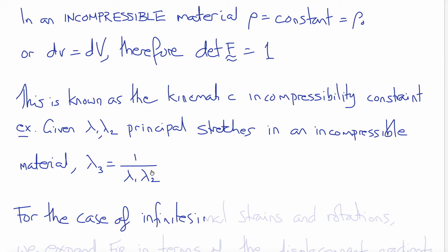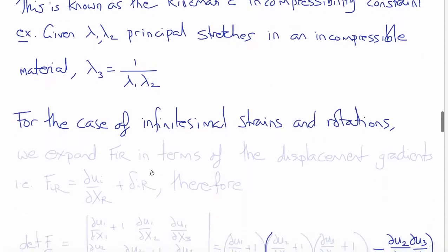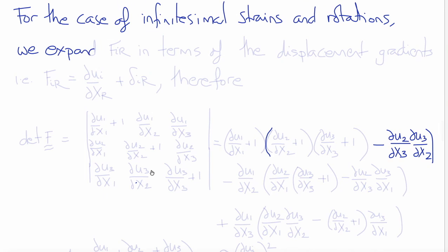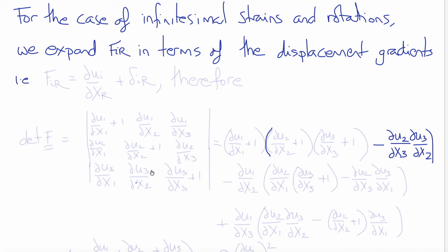Next let's look at the case of an infinitesimal strain field and infinitesimal rotations — in other words, where the displacement gradients are small. We'll expand the components of the deformation gradient tensor in terms of the displacement gradients: F_iR equals (del u_i / del X_R) plus delta_iR. Therefore, the determinant of F will be the determinant of the following matrix.